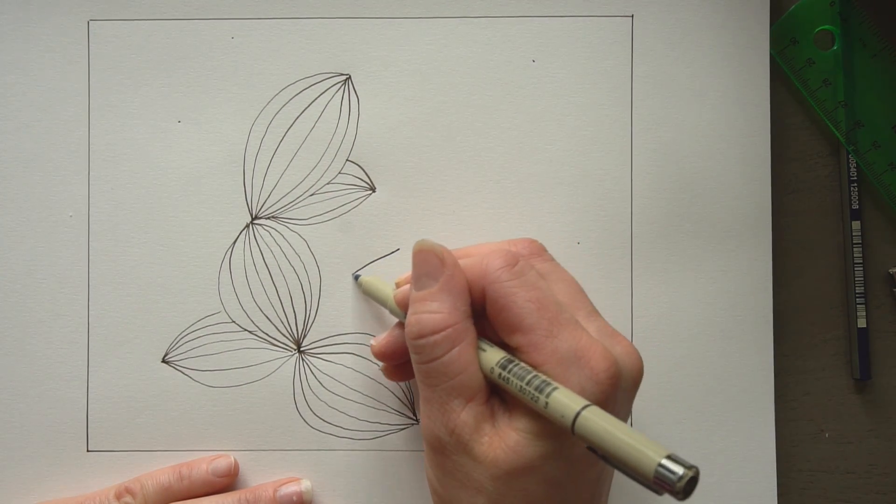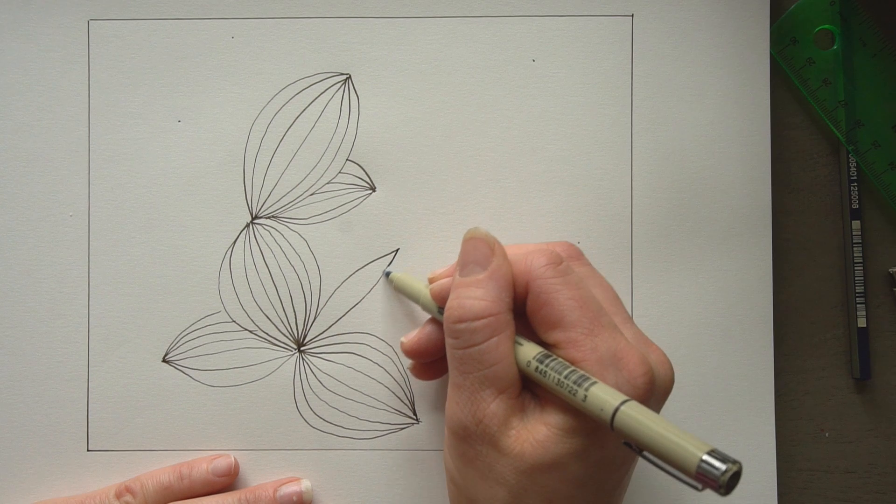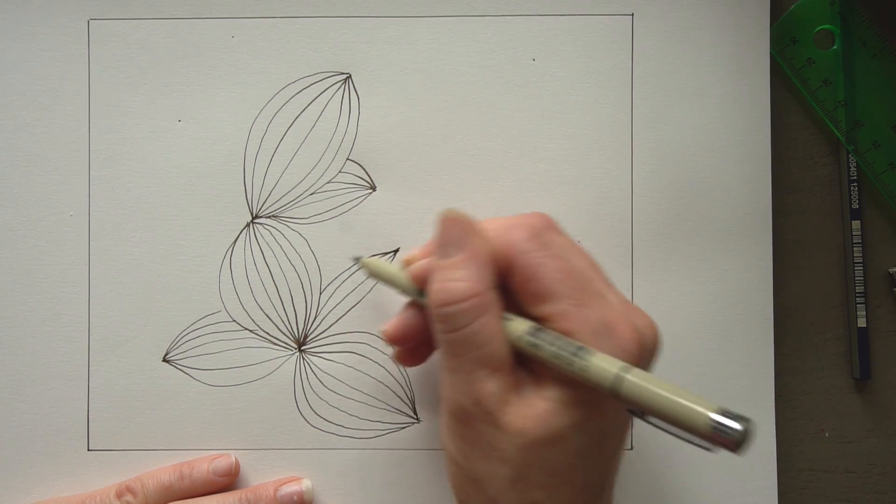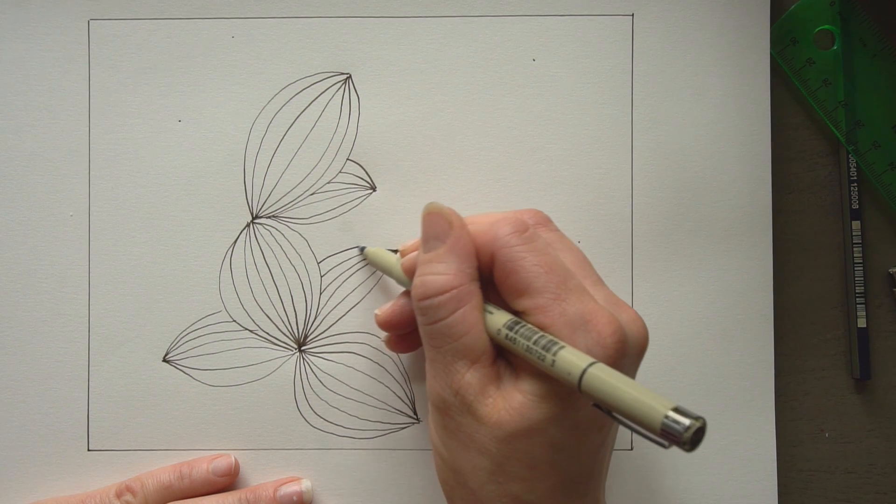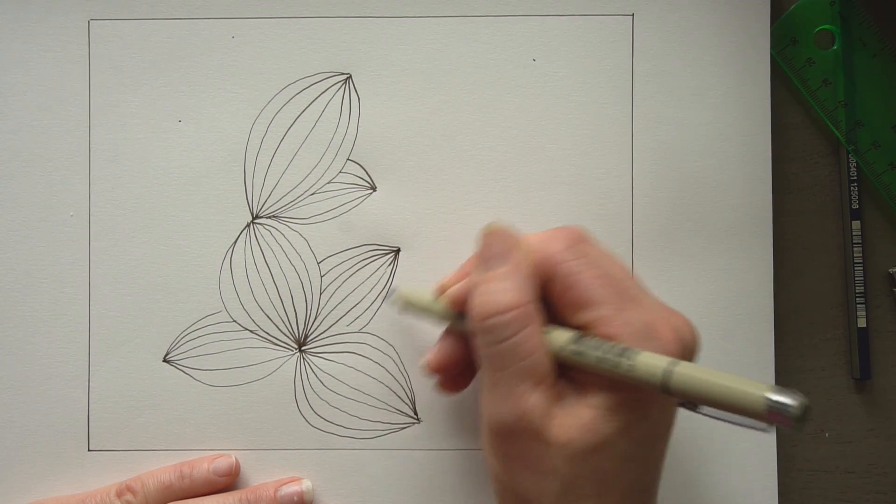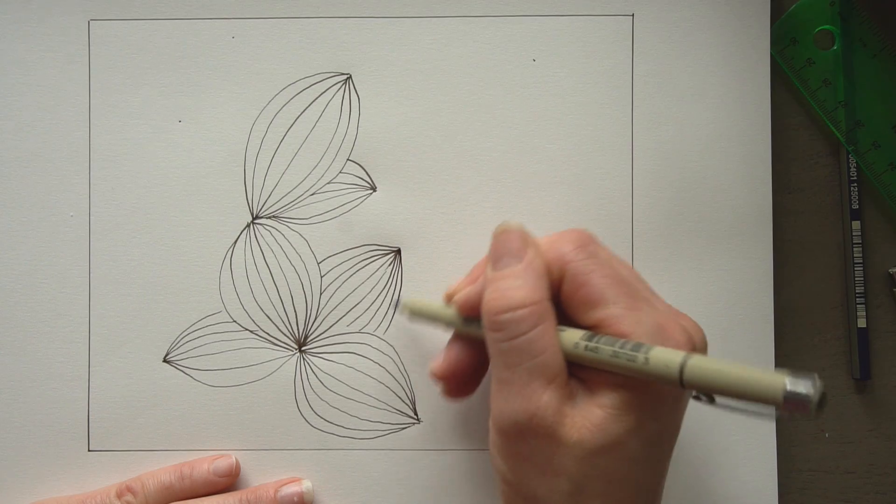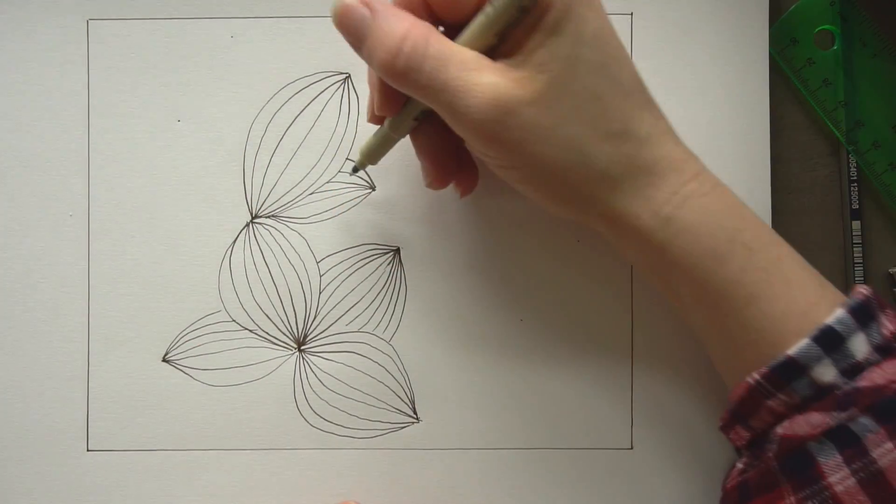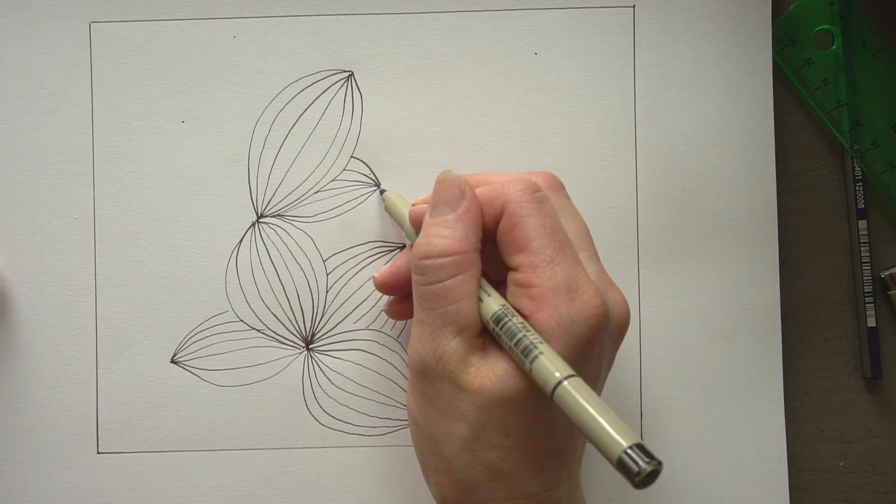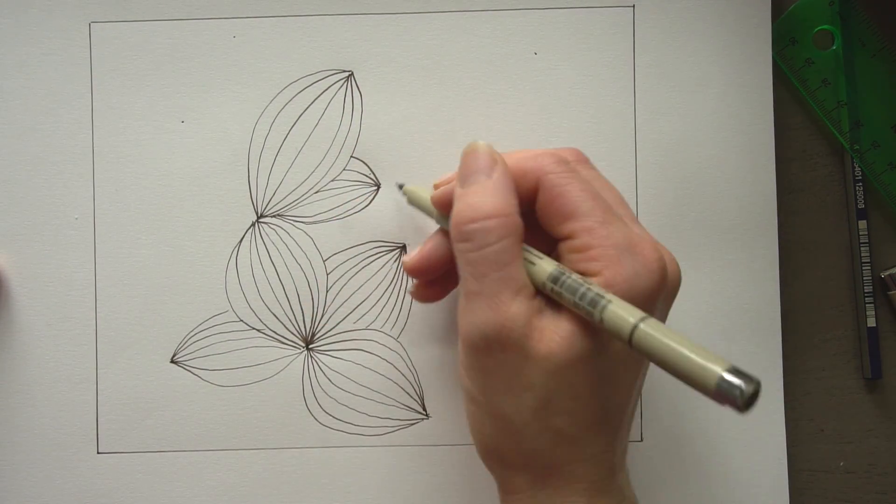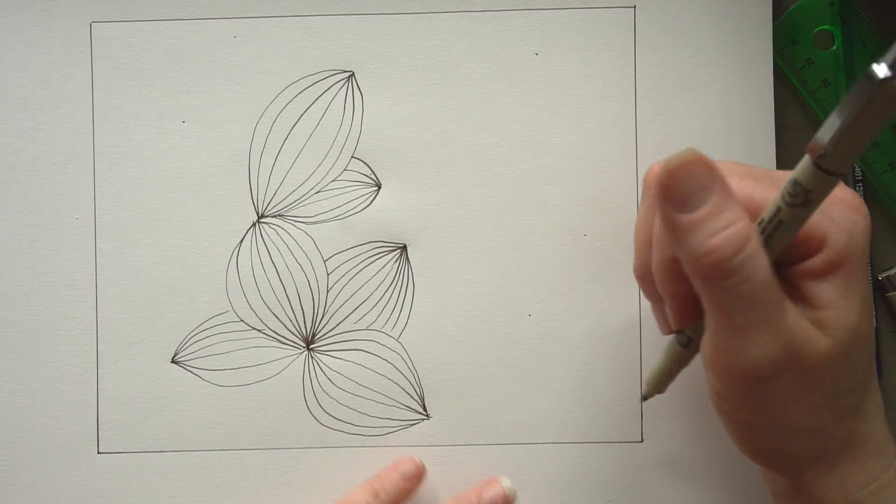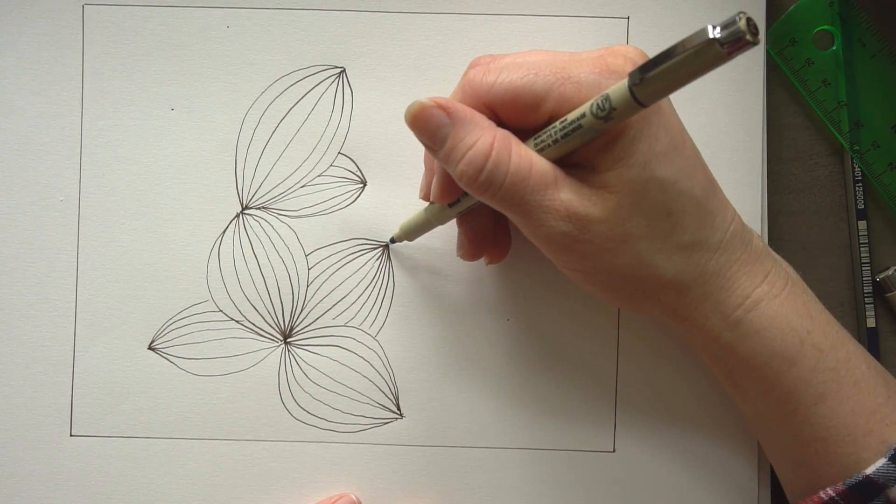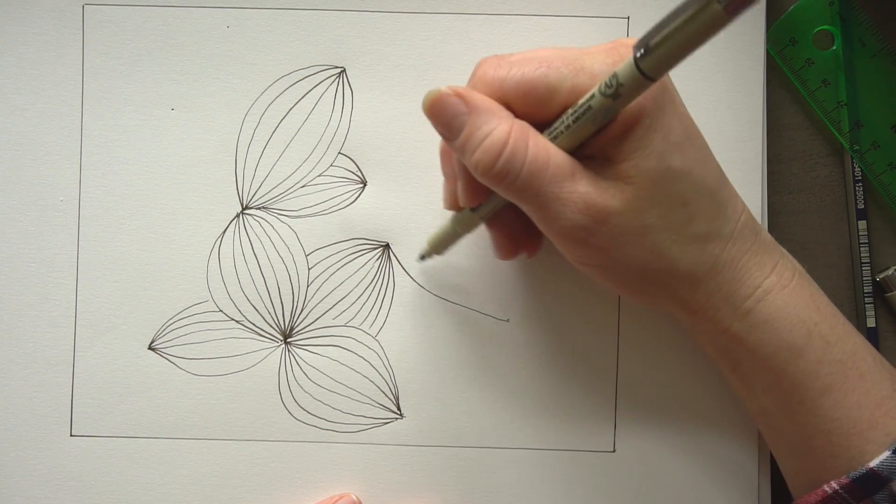You could make these more round than oval like I have them. And the key to making it kind of look like it pinches in in these areas is just adding a little bit more weight in those areas. Now choose your dots and then just bring your lines over to them.